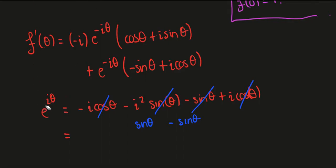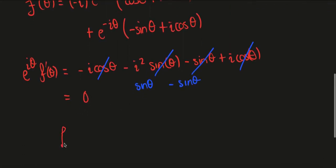So I've written something incorrect here, I should have e to the i theta f prime of theta, which we just showed was 0, and now if I divide both sides by e to the i theta again, remember the only reason I put that on this side was just to make it clearer which terms were cancelling.